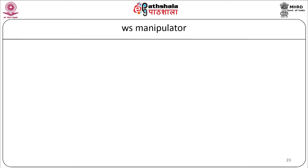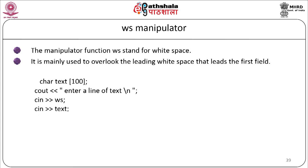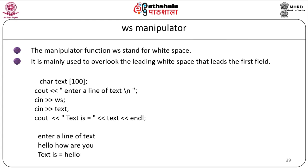The ws manipulator stands for white space. It is mainly used to overlook the leading white space that leads to the first field. For example: char text[100]; cout << 'enter a line of text'; cin >> ws; cin >> text; cout << 'text = ' << text. When executed, it asks for input — if the user enters 'hello how are you', it will just accept 'hello' and display: text = hello.